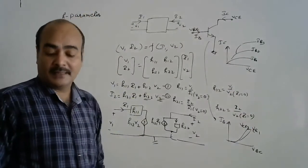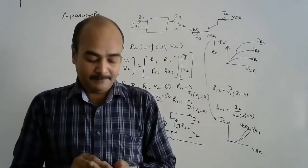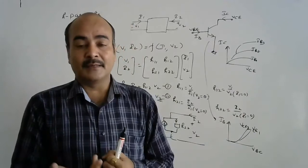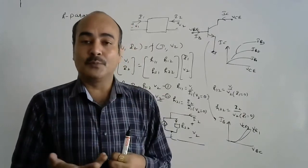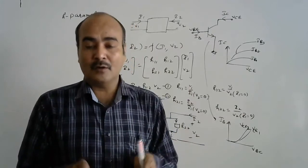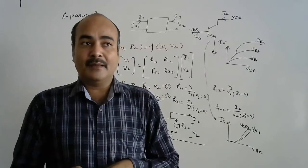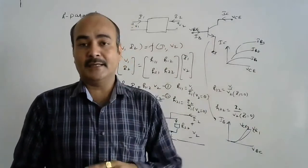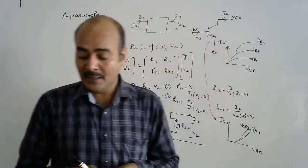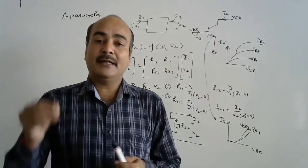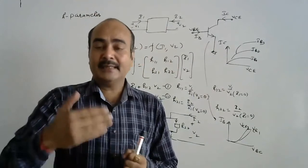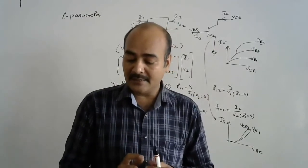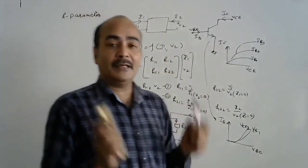Now we discuss the T parameter, also called the transmission parameter. As the name implies, we use it when transmitting the output of one circuit to the input of another — that is, connecting devices in cascade. The transmission parameter governs the mathematics of cascaded networks, relating the output of the first circuit to the input of the second circuit.